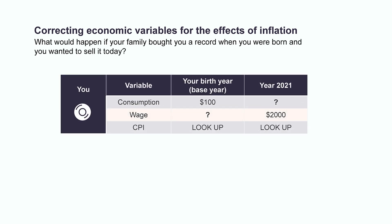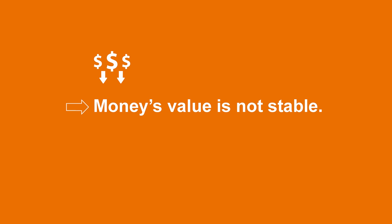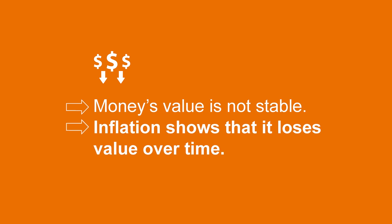Now, try it yourself. What year were you born? What would have happened if your family bought you a record at that time and you wanted to sell it today? Use that good's price and look up the Consumer Price Index for 2021 and the year you were born. Which results do you get? Our conclusion so far: money's value is not stable. Inflation shows that it loses value over time. Are there alternatives to prevent money from losing value?